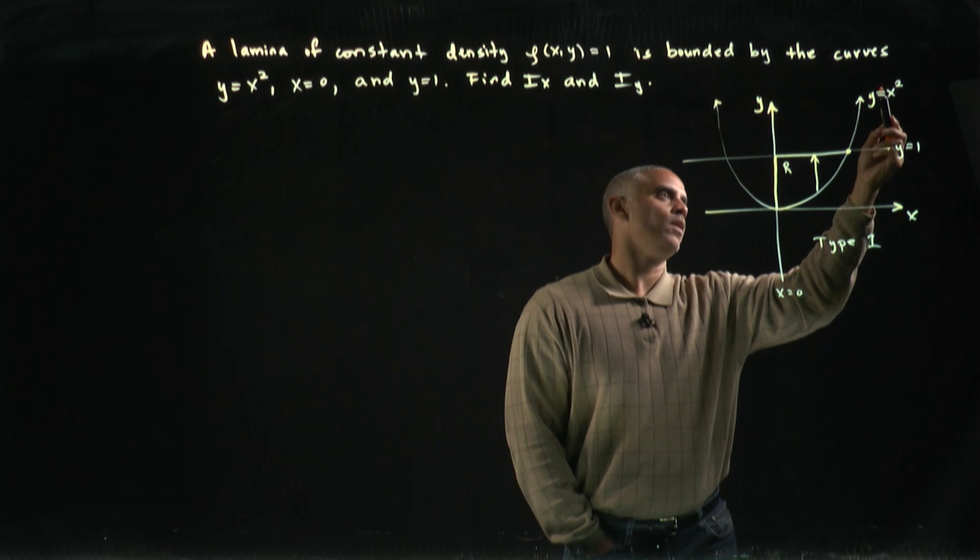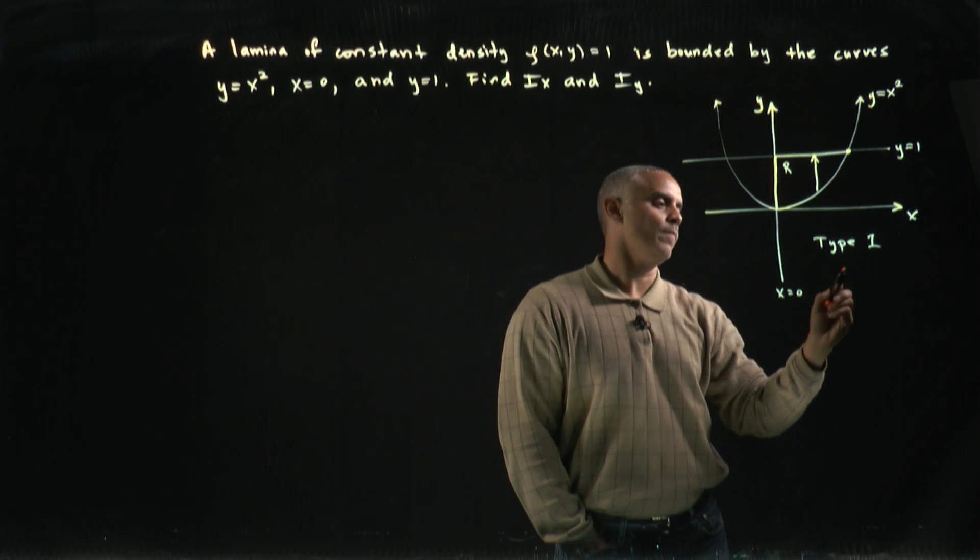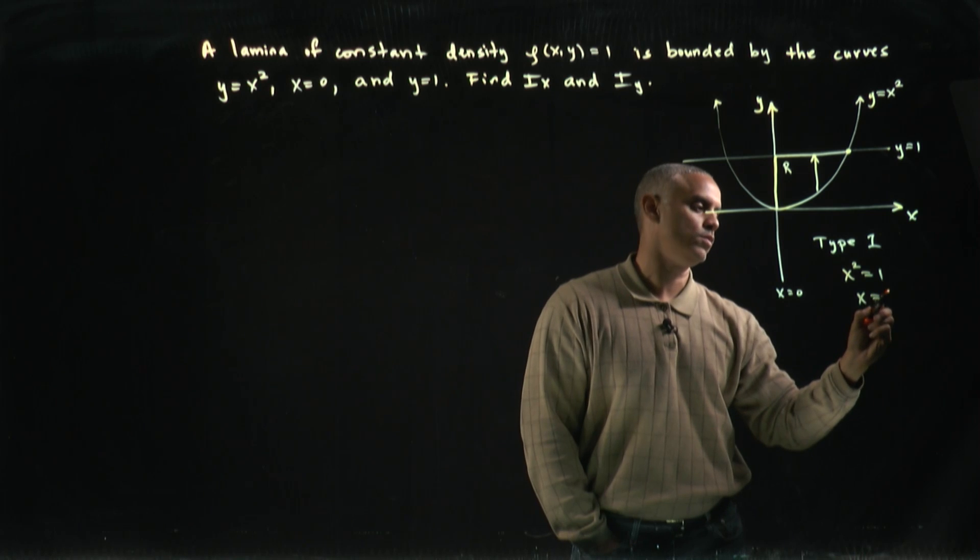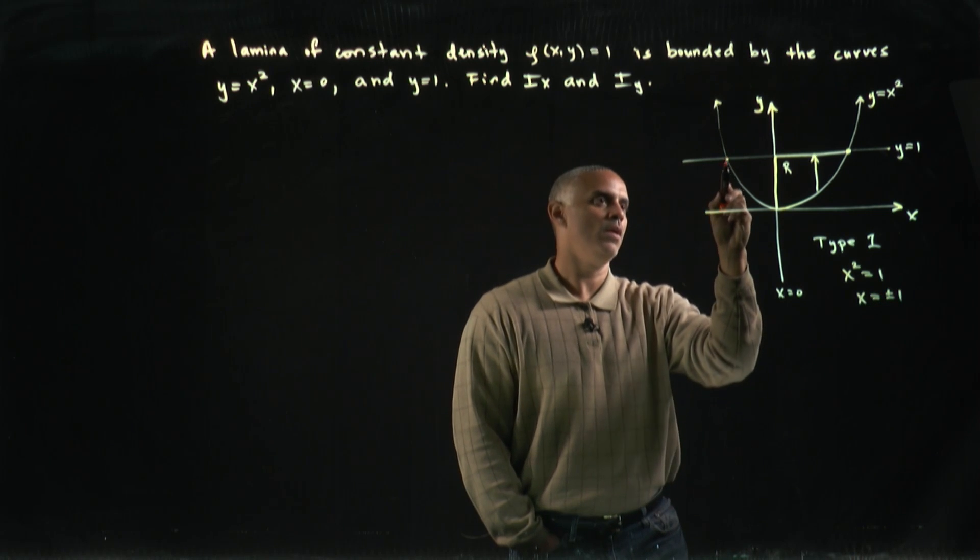Well, it has to be the place where x squared is equal to 1. If x squared is equal to 1, that says that these two graphs should meet at plus or minus 1.